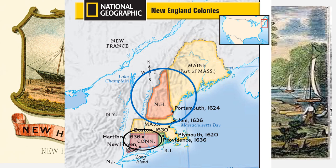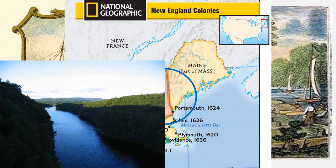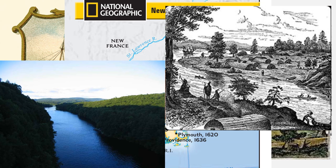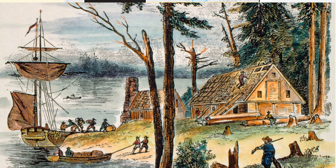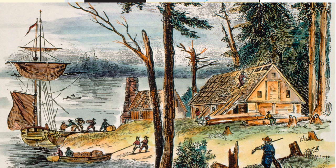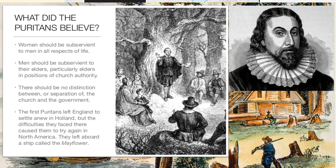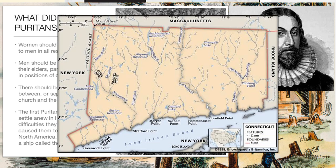Connecticut was originally settled by Dutch fur traders in 1614. They sailed up the Connecticut River and built a fort near present-day Hartford. The first English settlers arrived in Connecticut in 1633 under the leadership of Reverend Thomas Hooker. They were Puritans from the Massachusetts Bay Colony. After their arrival, several colonies were established, including the colony of Connecticut, Old Saybrook, Windsor, Hartford, and New Haven.